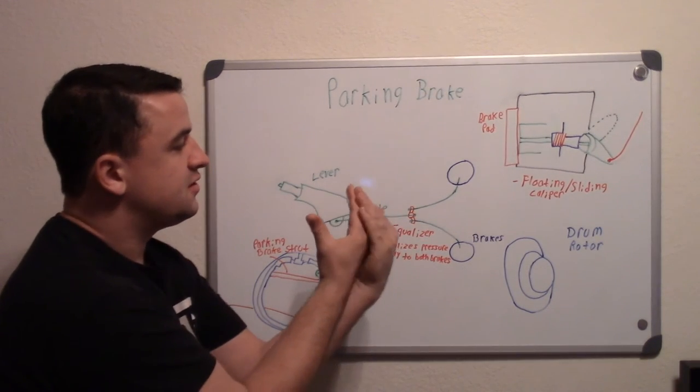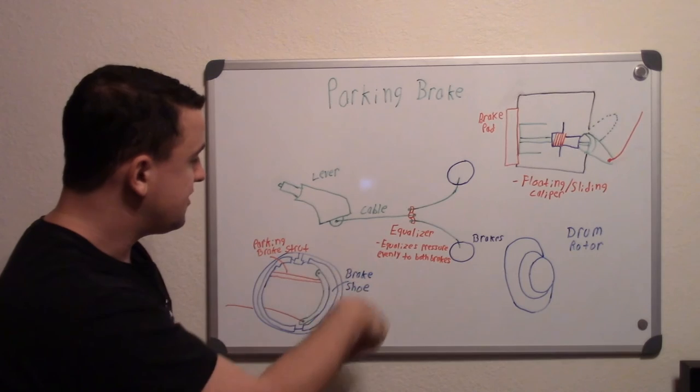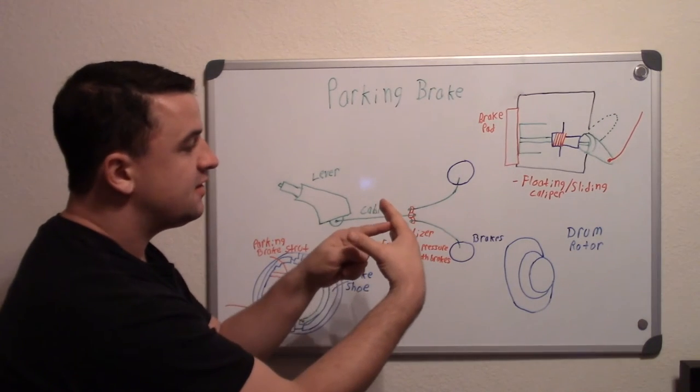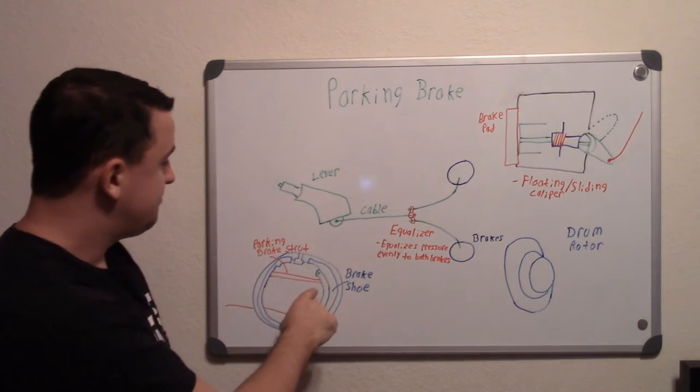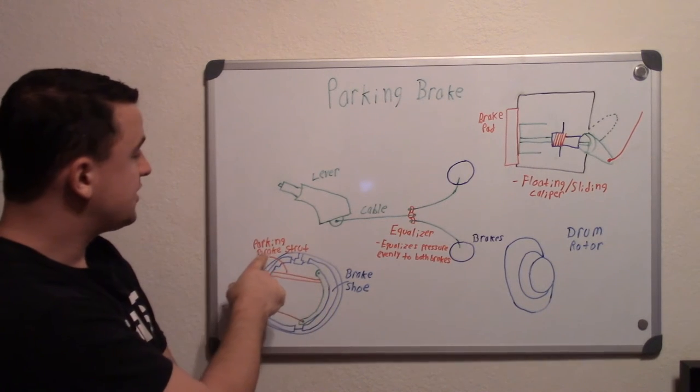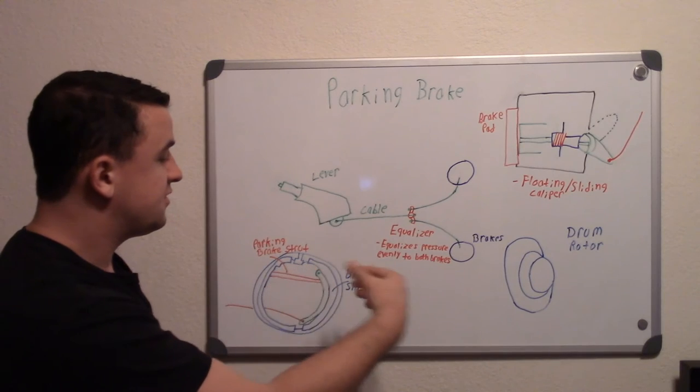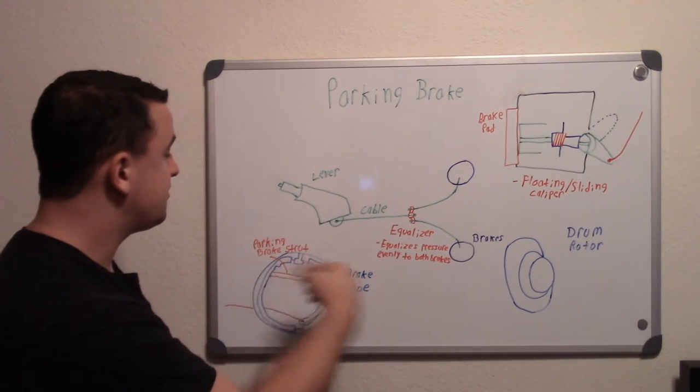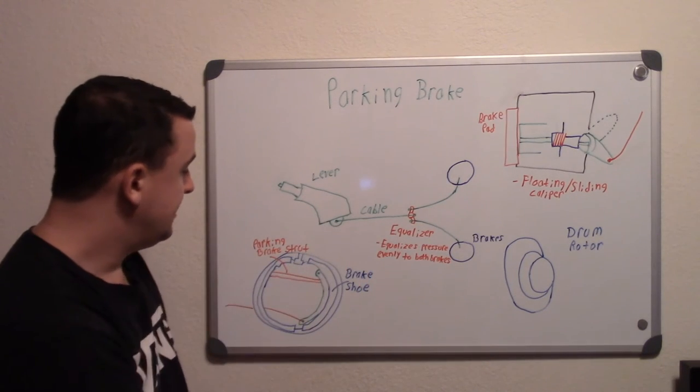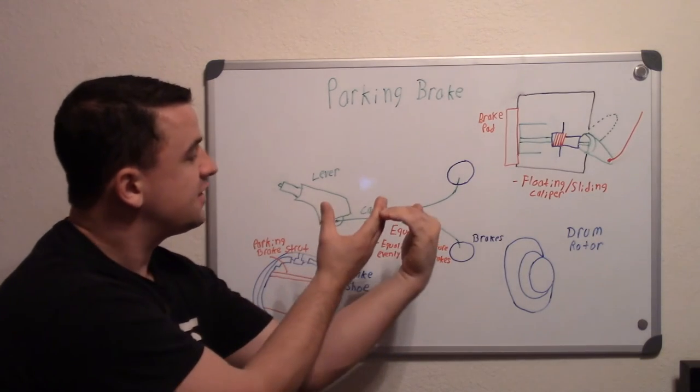It pushes this brake shoe out into the drum. As it pivots down here, it's pushing this way, and that pushes this parking brake strut across. As that goes across, it engages the brake shoe on this side. So it pivots, engages the brake on that side, and transfers that energy this way into this side.